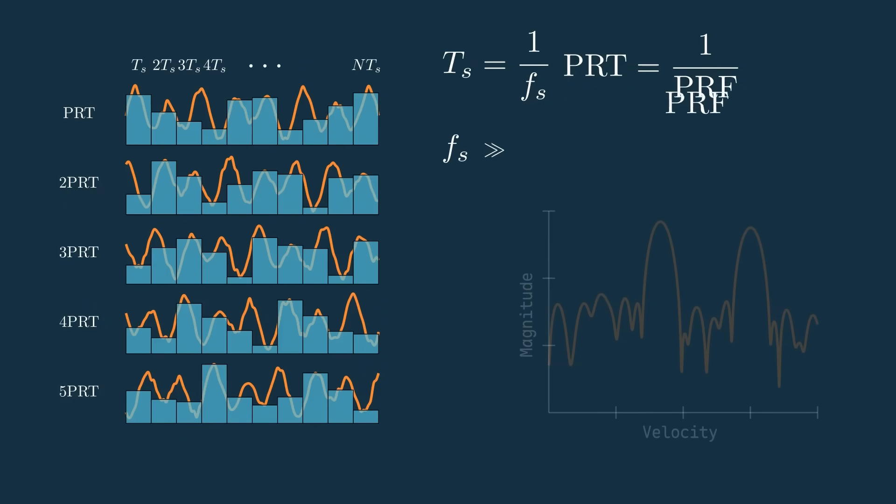Since the sampling frequency is generally much faster than the pulse repetition frequency, Ts will be smaller than the PRT, so we can call this the fast time axis and this the slow time axis.